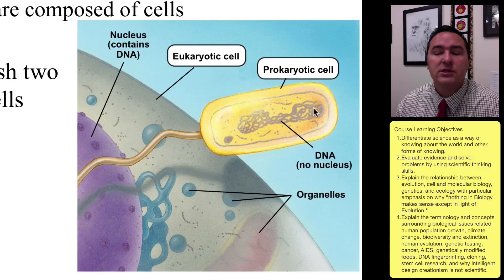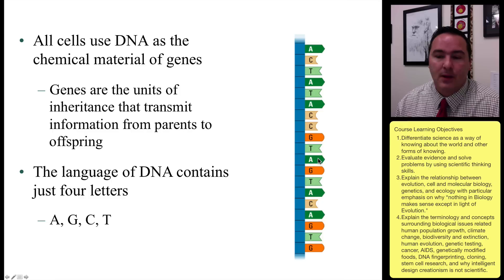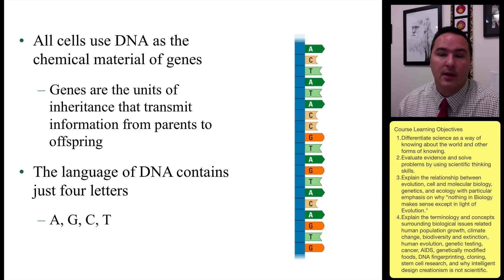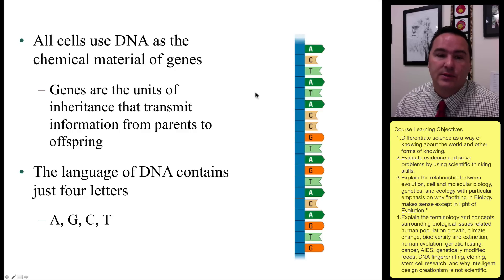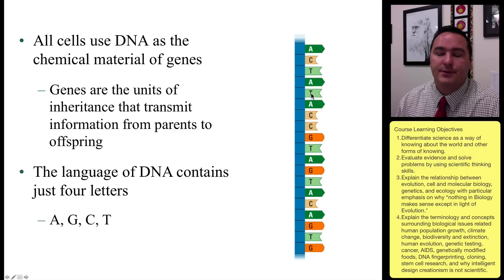Prokaryotic cells, on the other hand, are usually much smaller — they do not have a nucleus, but they do have DNA. This DNA is common to all organisms on this planet; all of life has DNA and uses DNA. DNA is the molecule that houses the genes, and the genes are the units of inheritance — the information pieces passed on from parent to offspring.